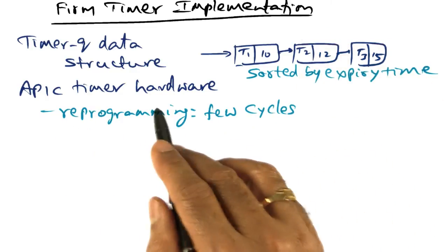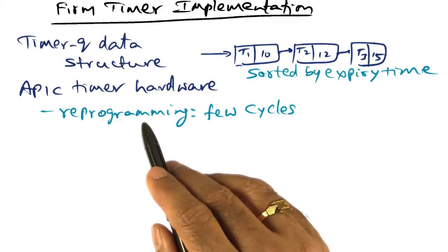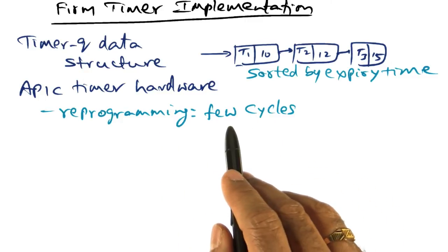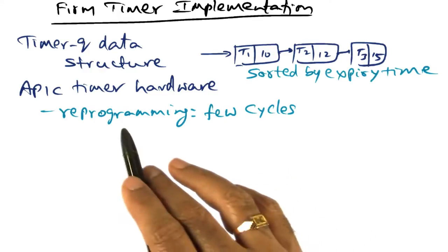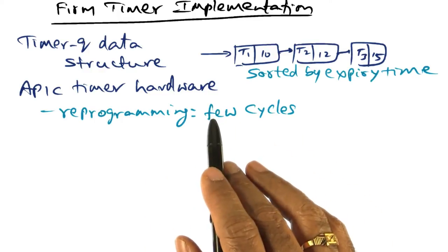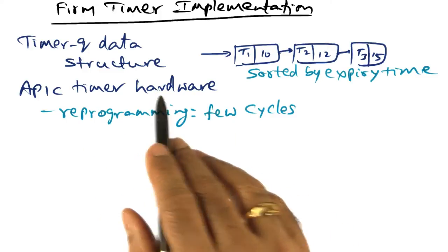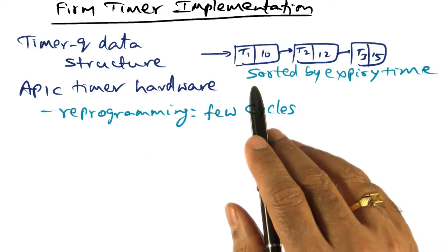The good news is with the APIC timer hardware, reprogramming a one-shot timer takes only a few cycles. So there is not a significant overhead to reprogramming a one-shot timer on modern CPUs because of the availability of the APIC hardware.